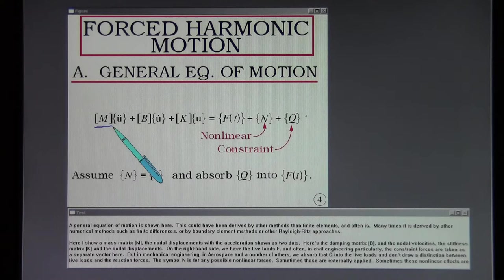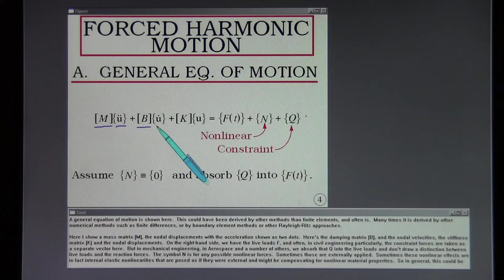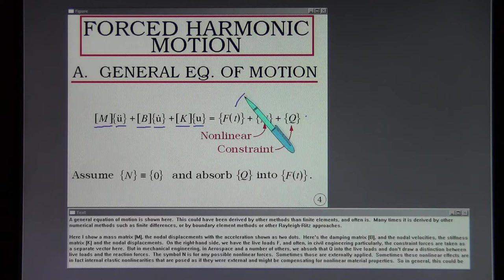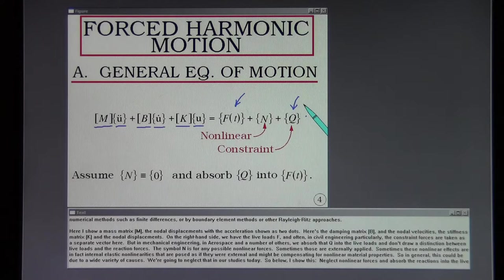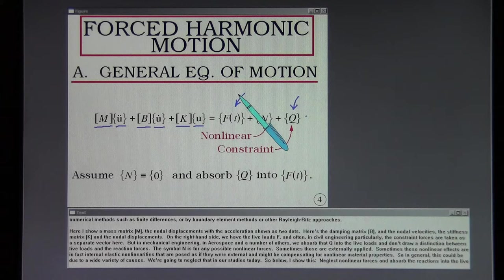Here I show a mass matrix capital M, the nodal displacements with the acceleration shown as two dots. Here's the damping matrix B and the nodal velocities, the stiffness matrix K and the nodal displacements. On the right side we have the live loads F and often in civil engineering particularly the constraint forces are taken as a separate vector here. But in mechanical engineering and aerospace and a number of others we absorb that Q into the live loads and don't draw a distinction between live and reaction forces.